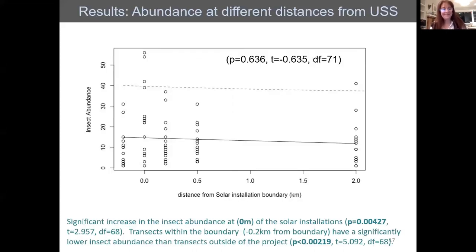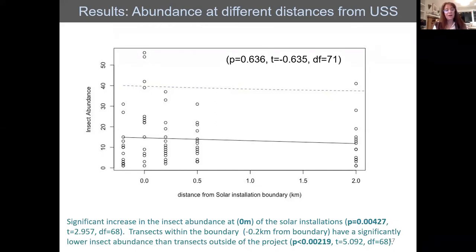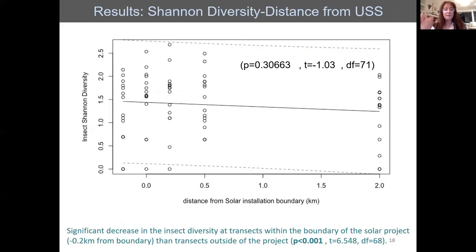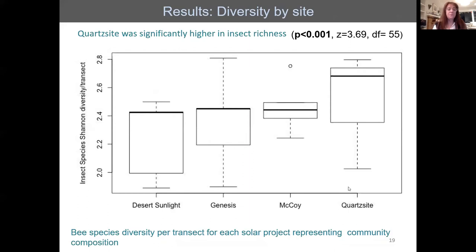So, are solar facilities affecting native bees in the deserts? This slide shows bee abundance by distance from the solar boundary. Inside the solar project, abundance is lower; there is a big jump right at the boundary line. There is a significant difference between inside the solar projects and the boundary line and just outside — which is what this shows, and it is statistically significant.